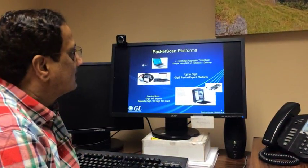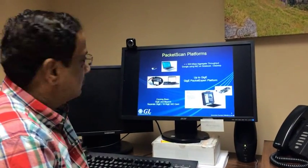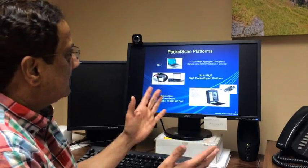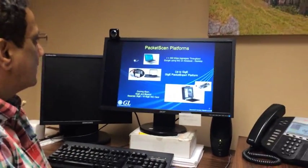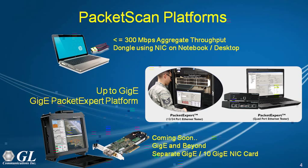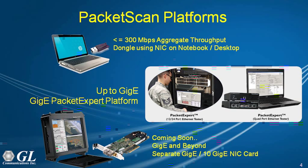Can you tell us more about Packet Scan platforms? We have three different ways you can run Packet Scan. You can run it on a notebook PC using the NIC card — that's up to about 300 megabits of aggregate traffic, which is about 2,000 simultaneous calls. We require a dongle to protect our software, but it's a very inexpensive way to go. The other way is our Packet Expert, which has up to a Gigabit interface with hardware filtering and wire-speed capture — that's a really powerful way of doing it, supporting tens of thousands of calls.